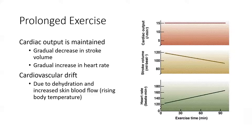To maintain a high cardiac output, stroke volume starts out large but decreases as exercise continues. During longer bouts of hard work, heart rate goes up throughout while stroke volume goes down, because more blood flow moves to the skin to address temperature regulation. Dehydration from sweating and metabolic processes also decreases available blood volume, further lowering stroke volume during prolonged exercise.